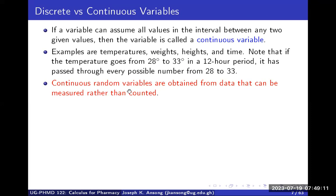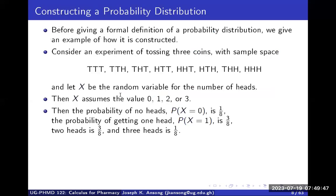Continuous random variables are obtained from data that can be measured rather than counted. You can measure weight, height, and temperature, but you can't really count them. We can't say that between two temperatures there were exactly 10 values, because it's uncountable. So the key difference is: discrete variables can be counted; continuous variables can only be measured. We are going to focus on discrete random variables.